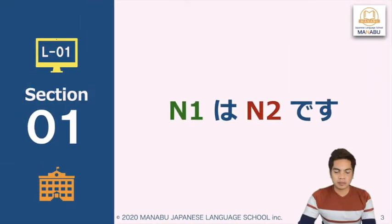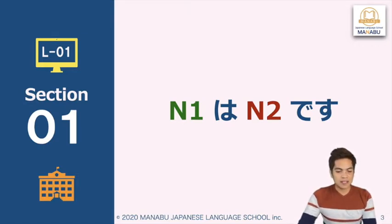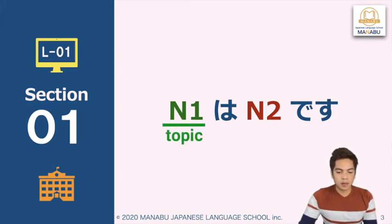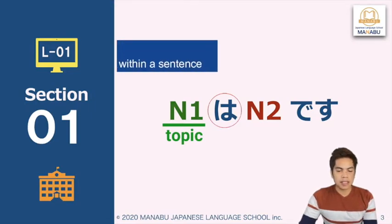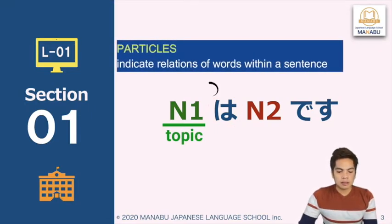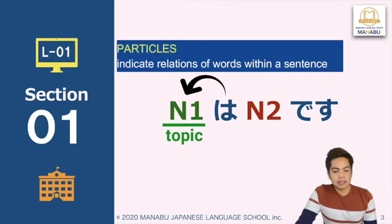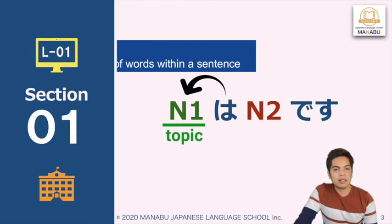Our first grammar point is Noun 1 wa, Noun 2 desu. Noun 1 is our topic of the sentence, followed by the particle wa. This is called a sentence particle. The particle wa indicates the topic of the sentence. This sentence is about Noun 1 — we will describe Noun 1.